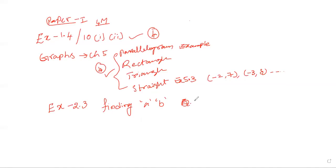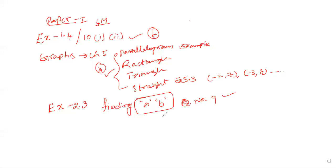Question number 9 — you can tell us about finding A-B, question number 9, exercise 2.3, question number 9. It is a very lengthy problem. That's why you have to practice some questions about A-B, examples, exercise 2.3. Exercise 2.3 is important.